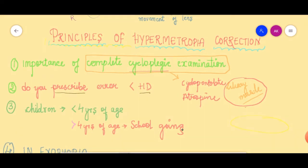The second principle is regarding the prescription of hypermetropic error. Do you prescribe when the error is about one diopter or less? The answer is only if the patient is symptomatic — that means the patient is reporting asthenopic symptoms. It is very rare to prescribe such a small hypermetropic error because that much is already being taken care of by the ciliary muscle tone and latent hypermetropia.